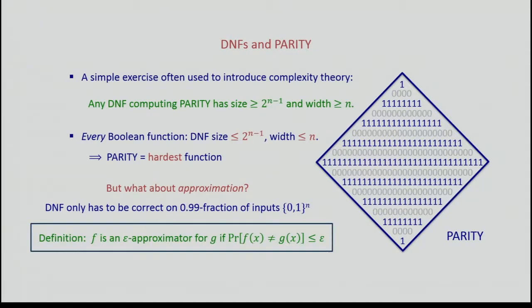Let me get the key definition out of the way. I'm going to say that a boolean function f is an epsilon approximator for boolean function g if they differ on an epsilon fraction of inputs. That's really the only definition we need.